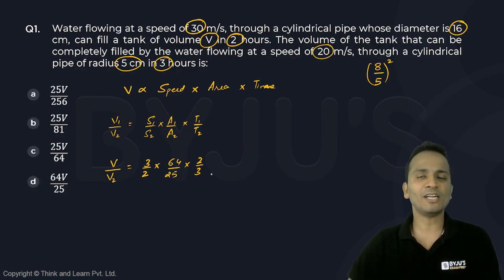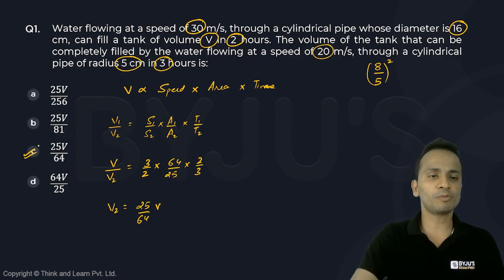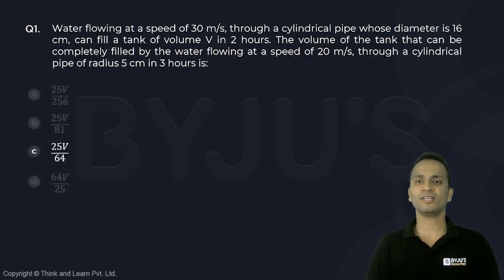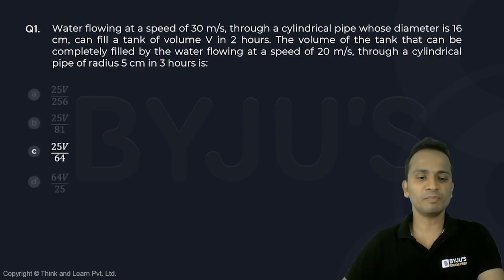Now 3 upon 2 and 2 upon 3 will cancel each other. So V2 will come out to be 25 upon 64 times V, and that will be the correct answer for this question. Option C is the correct answer for question number 1. Let's move on to question number 2.